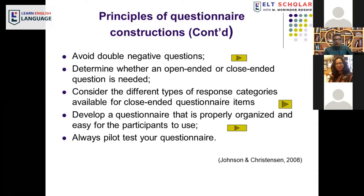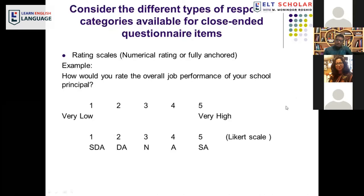Consider the different types of response categories available for close-ended questionnaire items. One example is a numerical rating scale — for instance, 'How would you rate the overall job performance of your school principal?' with a scale of 1 (very low) to 5 (very high). Another type is the fully-anchored Likert scale: 1 = Strongly Disagree, 2 = Disagree, 3 = Neutral, 4 = Agree, 5 = Strongly Agree.